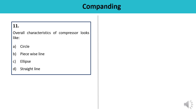Question number eleven: The overall characteristic of a compressor looks like — a circle, piecewise line, ellipse, or straight line? The overall compander characteristic, which involves both compression and expansion, looks like a straight line. The answer is D.